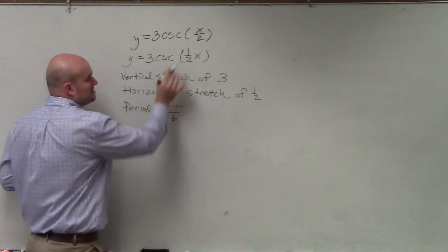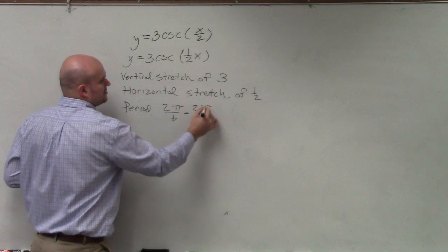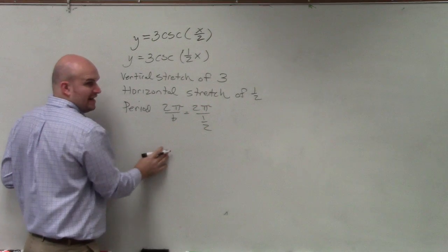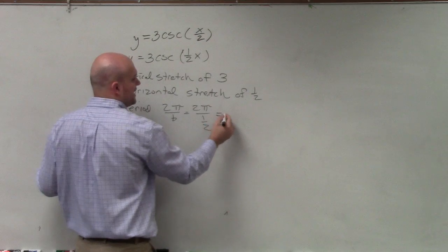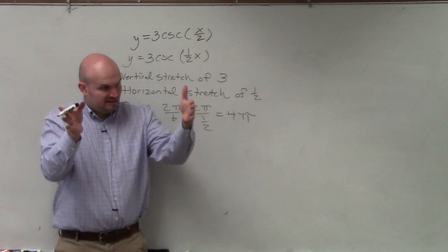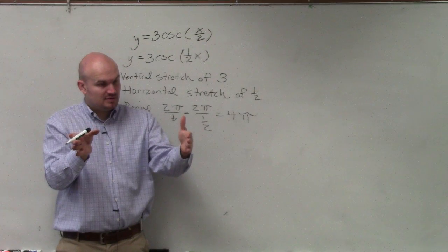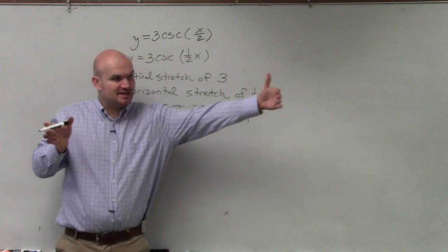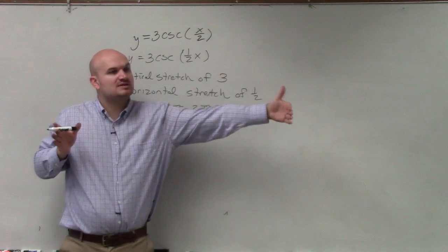2π over b. What's b in this case? One-half. Multiplied by the reciprocal, you now have a new period of 4π. So instead of it taking 2π to create a period, it now takes 4π. So it's being horizontally stretched.